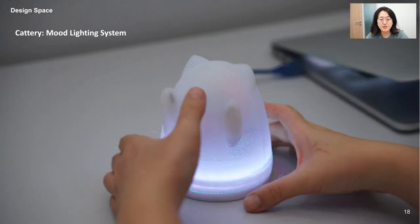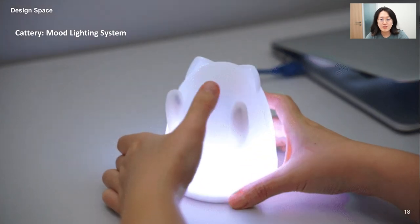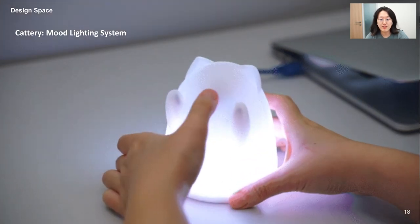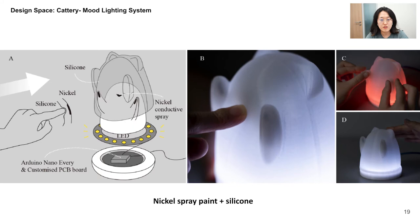The third example is a lamp. By touching different parts of the lamp, the light will change. Silicone is used for light diffusion and nice haptic interaction, as well as serving as the TENG material.